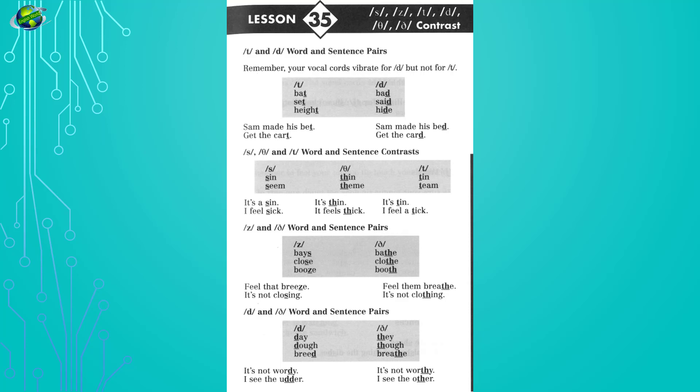Lesson 35: T and D contrast. Bad, set, said, height, hide. Sam made his bed. Get the cart. Get the card.